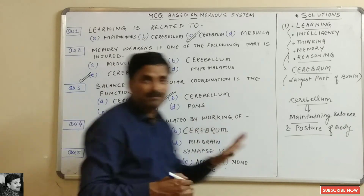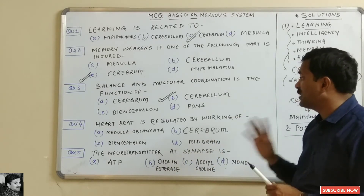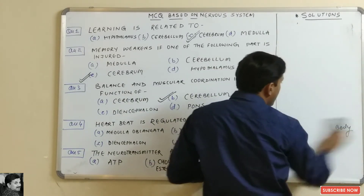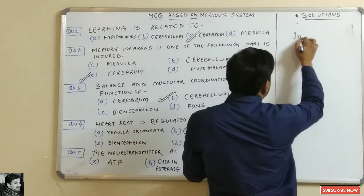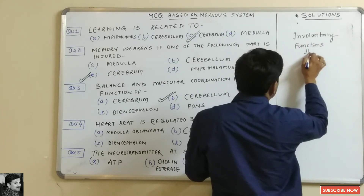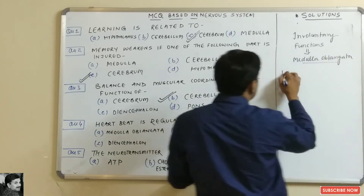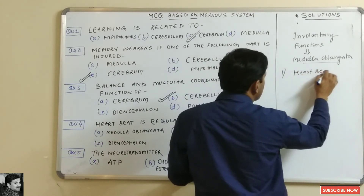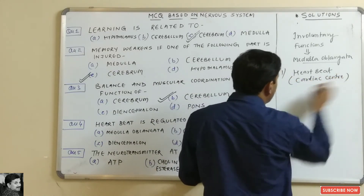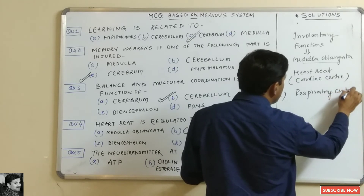Question four: heartbeat is regulated by the working of which part? There are many involuntary functions in the body, and those involuntary functions are controlled by the medulla oblongata. Heartbeat is controlled by the medulla oblongata, and we can also say the cardiac center and the respiratory center are both located in the medulla oblongata.